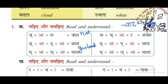Daga — daga means thread. We already know 'dag'; we add the 'aa' matra and it becomes daga, meaning thread. Bala — bala means young. Javelin — javelin.